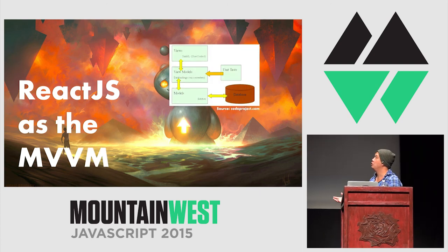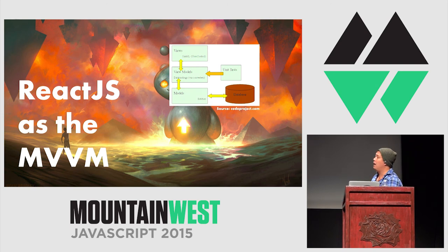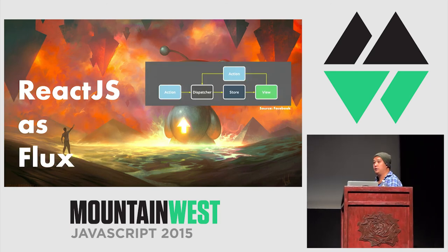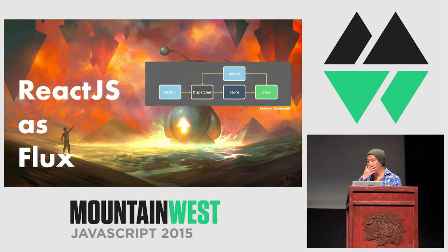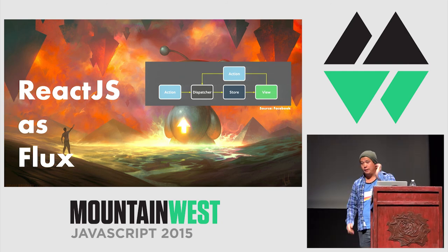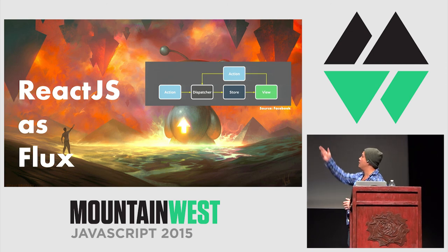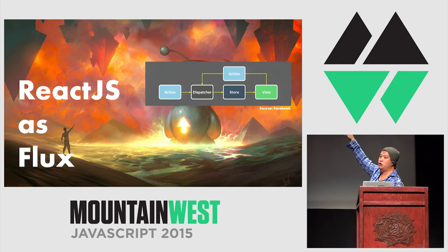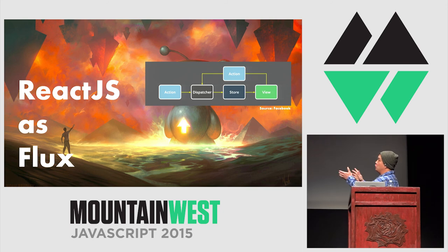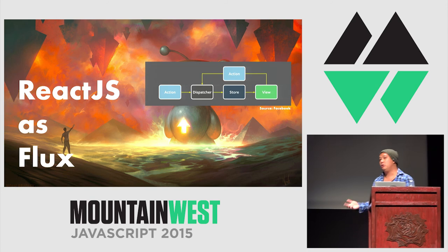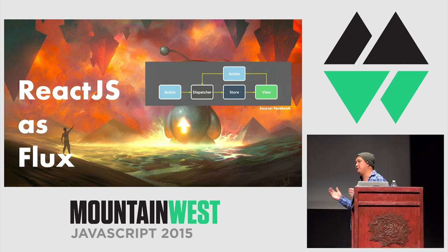Then there's React as MVVM — model-view-view-model — which is a little closer because you can conceive of a component as a view model. But again, MVVM implies two-way data binding between views, view models, and models, which we just don't have in React. Then there's React with Flux — a library Facebook came out with that works in conjunction with React. Looking at its pattern: dispatcher feeds to store, to view, to action, with a feedback loop. I'd argue this is a close architecture to what we've done at Reddit, but we're not actually using Flux — we're not using dispatchers or stores — so I can't say it follows this all that closely.